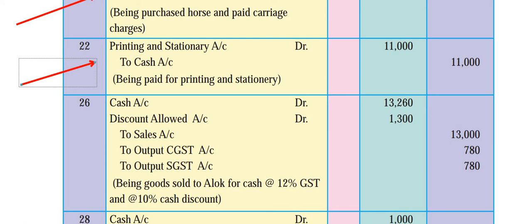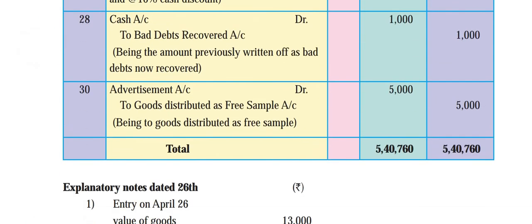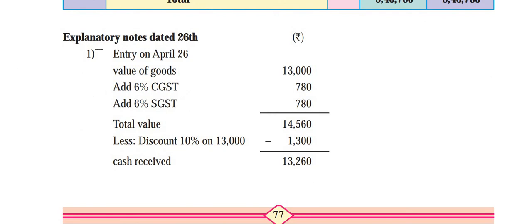Let's go to the calculation part so that you get clarity. 26th April: goods sold 13,000. Calculate GST: 6% central GST = 780, 6% state GST = 780. Total = 13,000 + 780 + 780 = 14,560. But 10% cash discount is given on 13,000, so that is 1,300. Actual cash received = 14,560 minus 1,300 = 13,260.